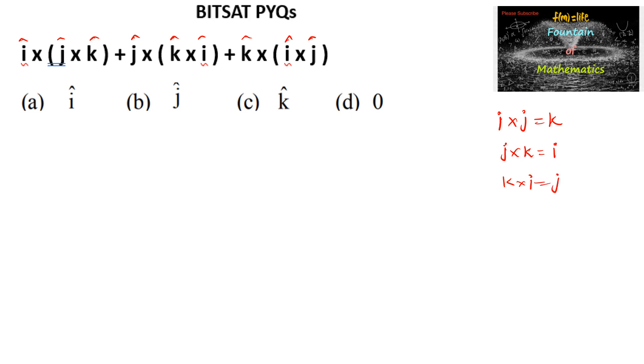So here we can write j cross k as i cross i, plus k cross i we can write as j, so j cross j, and i cross j is equal to k, so we can write k cross k.